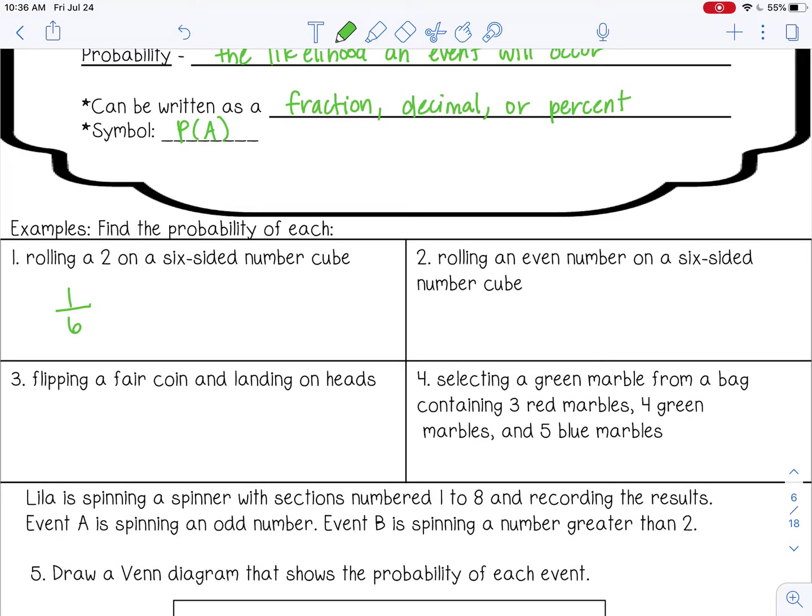You can leave it like that, or you can change it to a decimal by dividing 1 divided by 6, which gives you 0.16 repeating, or about 0.17. Or you can change that to a percent by moving the decimal two places to the right. So about 17%, or 16.7%, however you want to round.